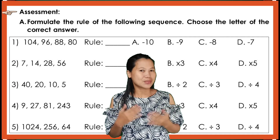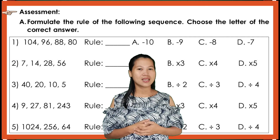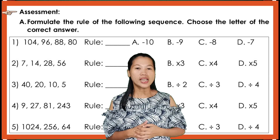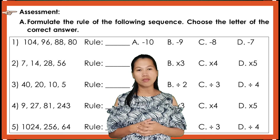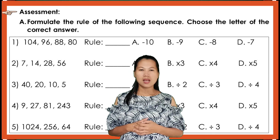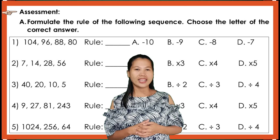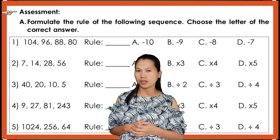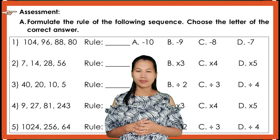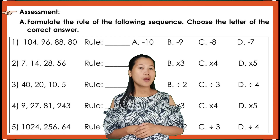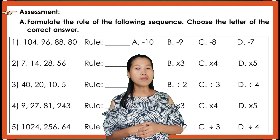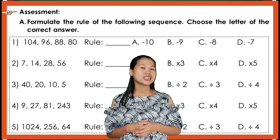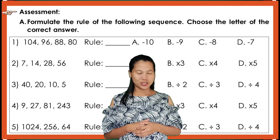For your assessment: Assessment A, formulate the rule of the following sequence. Choose the letter of the correct answer on your notebook. For Assessment B, perform and formulate the rule in finding the next term.